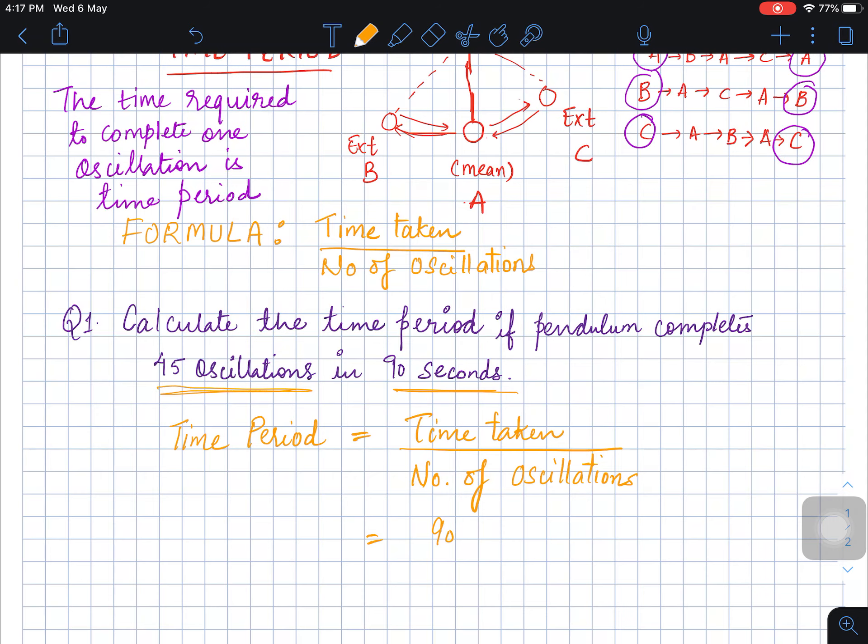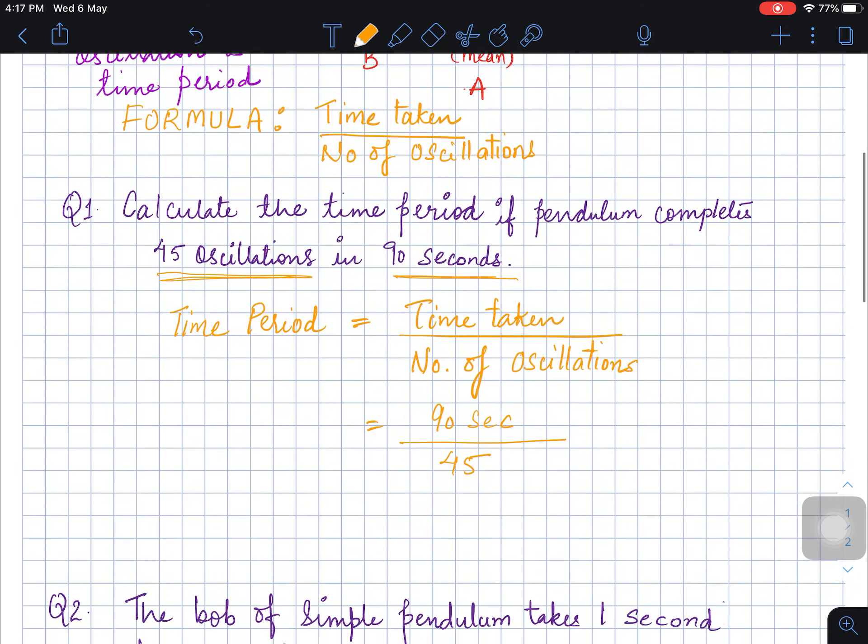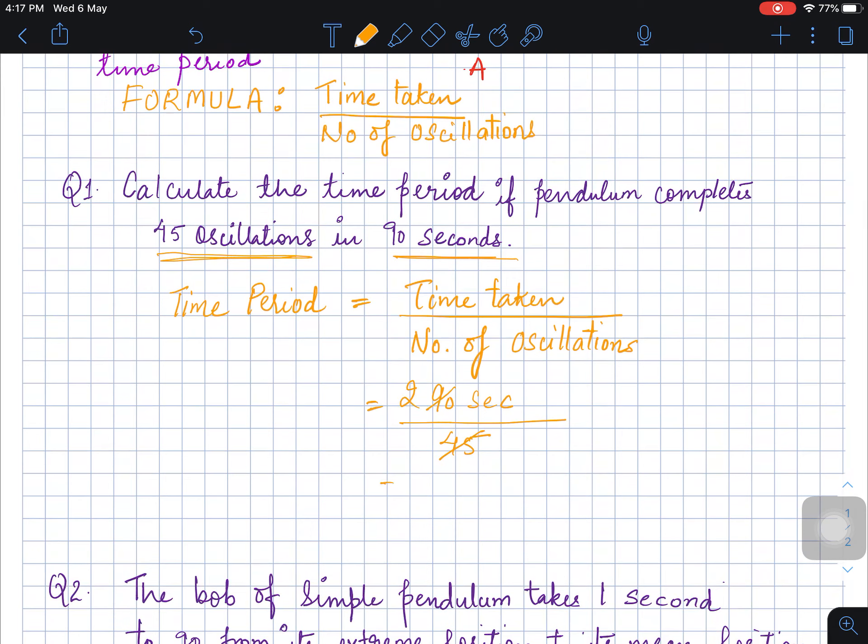Now here you have 90 seconds, and the oscillations are 45, so you just divide this. You get the answer as 2 seconds.